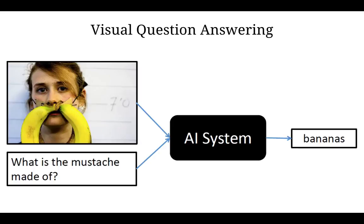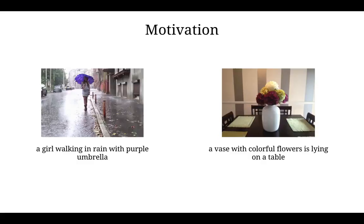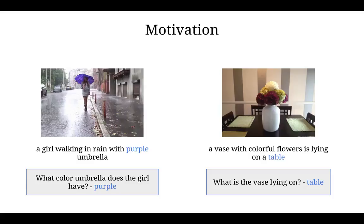A visual question answering system takes an image and a natural language question as input and tries to get the answer for the question. Now imagine what if we also had captions for each image. The captions can help our AI system to get the answer for the question.